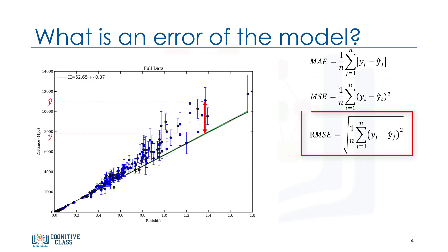Root mean squared error is the square root of the mean squared error. This is one of the most popular of the evaluation metrics because root mean squared error is interpretable in the same units as the response vector, or y units, making it easy to relate its information.